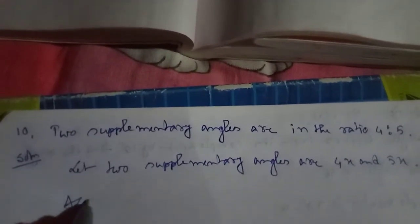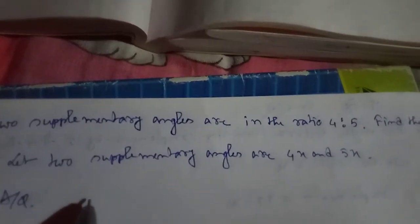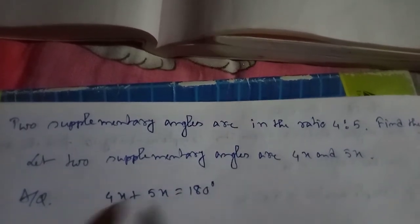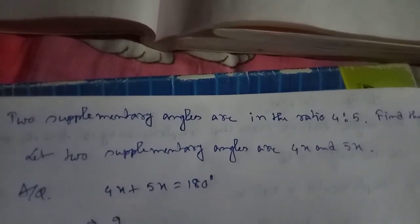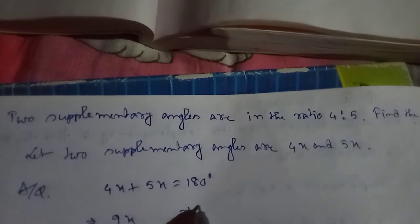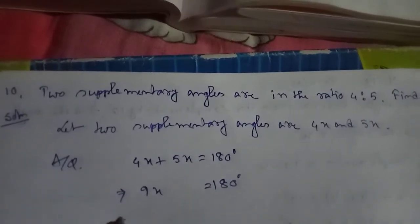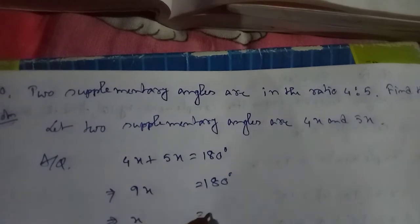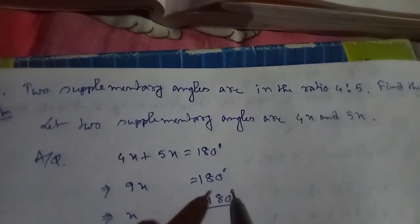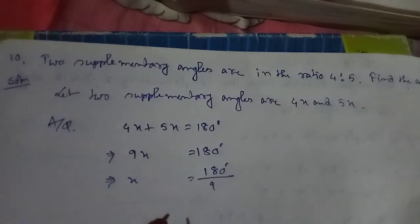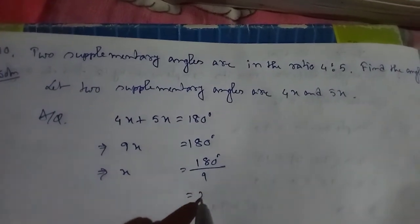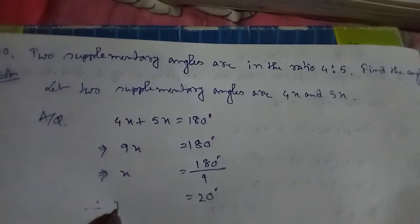Since they are supplementary, the sum of the two angles will be 180 degrees. So 4x plus 5x equals 180 degrees. That gives 9x equals 180 degrees, therefore x equals 180 divided by 9, which equals 20 degrees.